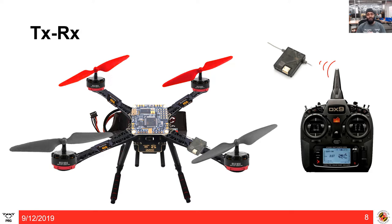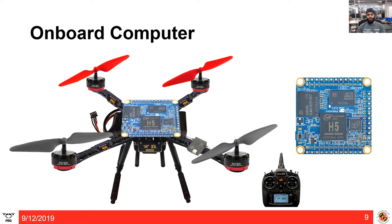Communication between the quadrotor and the operator can be crucial and depends on your system and desired range. The receiver (Rx) goes on top of the quadrotor, and a transmitter (Tx) running the same protocol sends commands wirelessly — for example, rolling the quadrotor in the negative direction — to the receiver, which then forwards those commands to the flight controller. An onboard computer is not required for manual control but is necessary for a self-sufficient autonomous quadrotor.